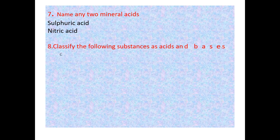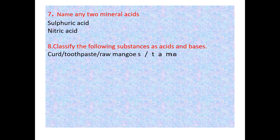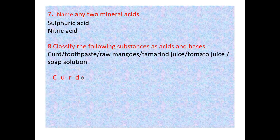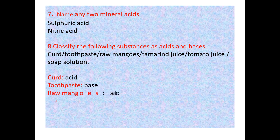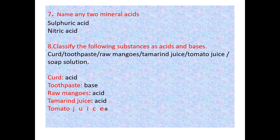Question 8: Classify the following substances as acids and bases — curd, toothpaste, raw mangoes, tamarind juice, tomato juice, and soap solution. Answers: Curd — acid; toothpaste — base; raw mangoes — acid; tamarind juice — acid; tomato juice — acid; soap solution — base.